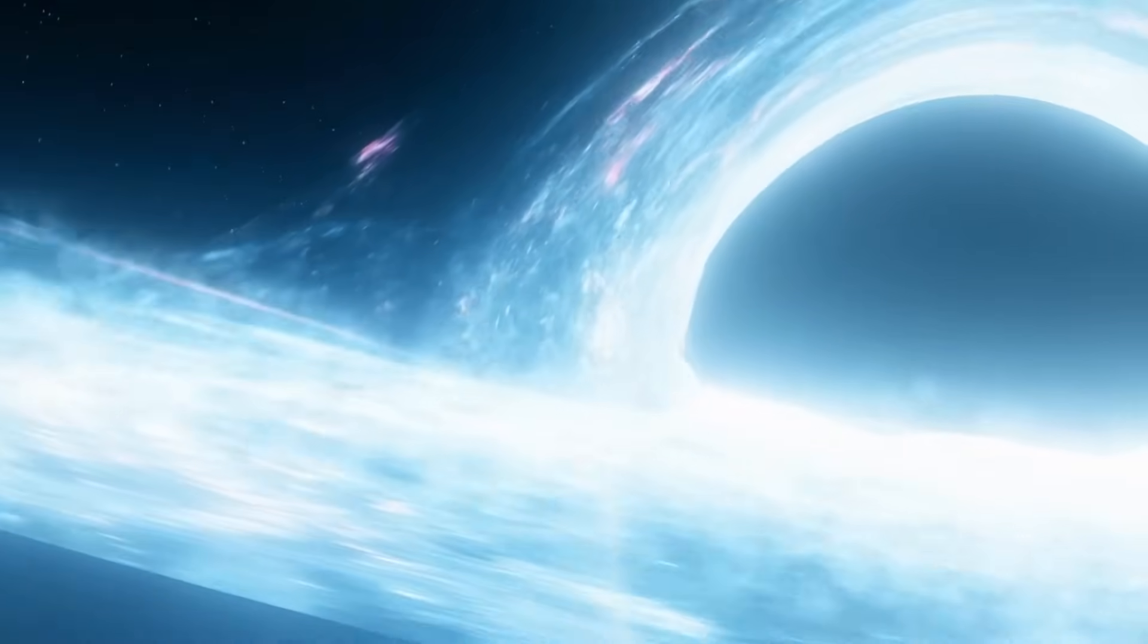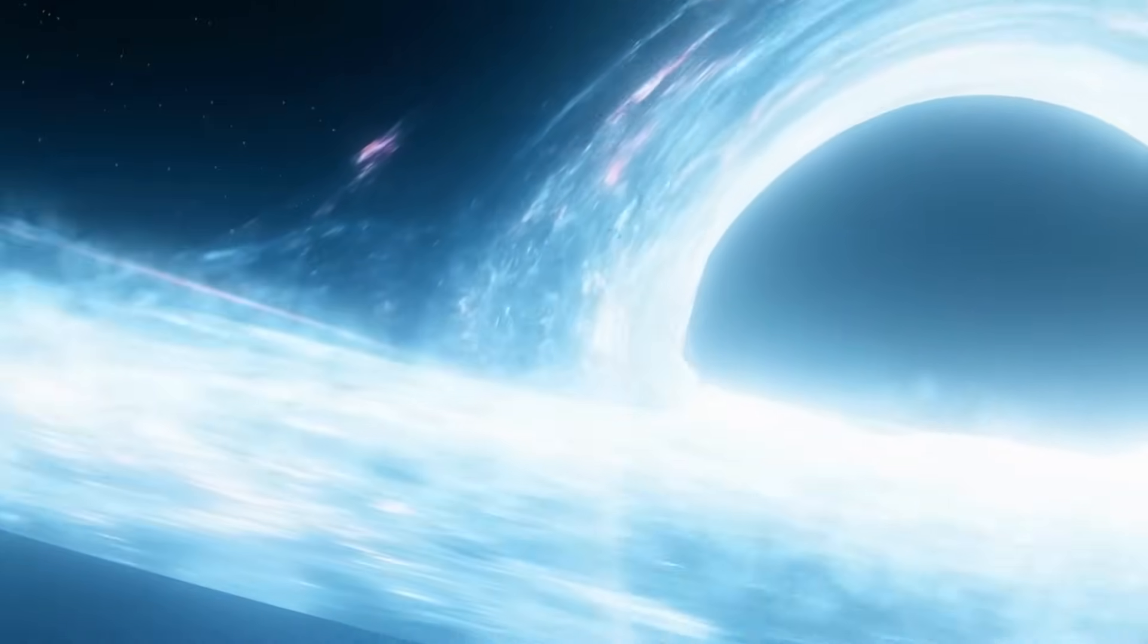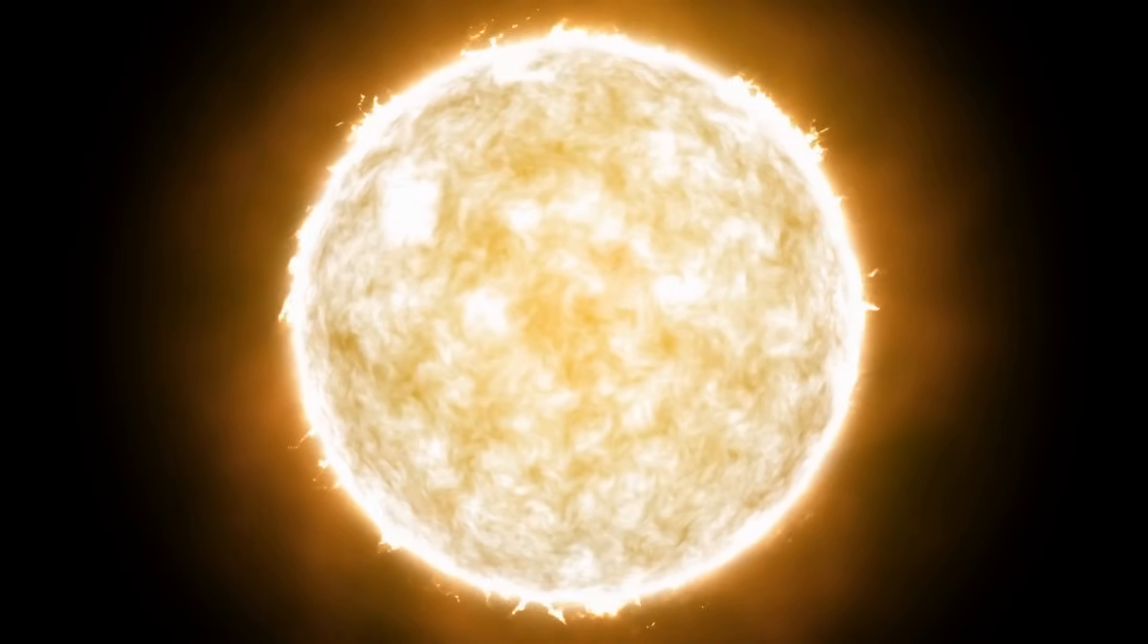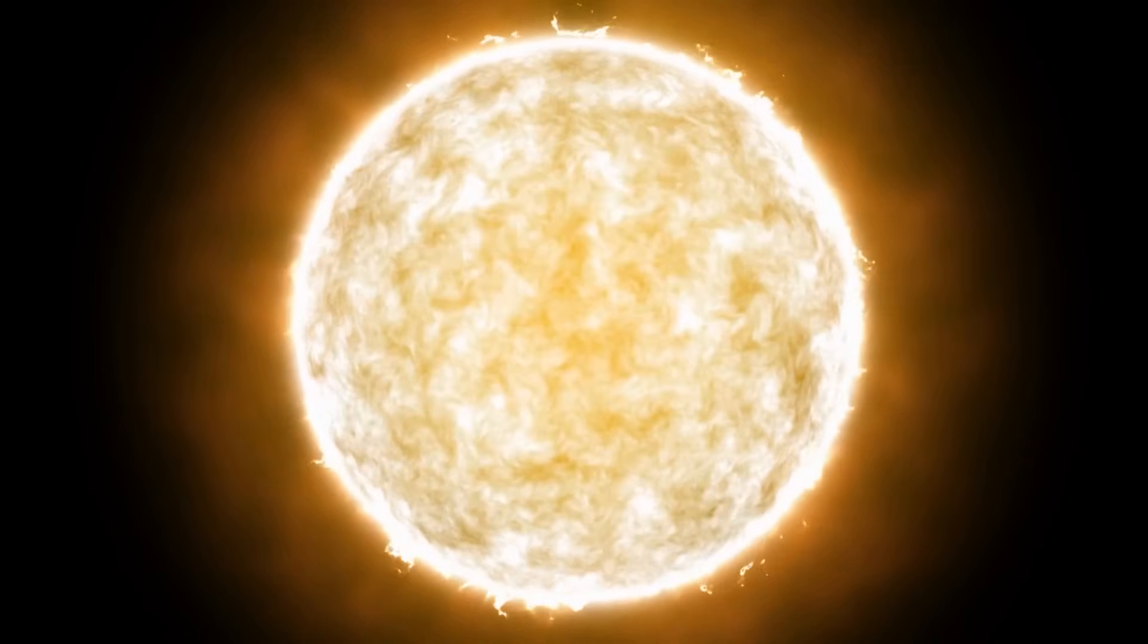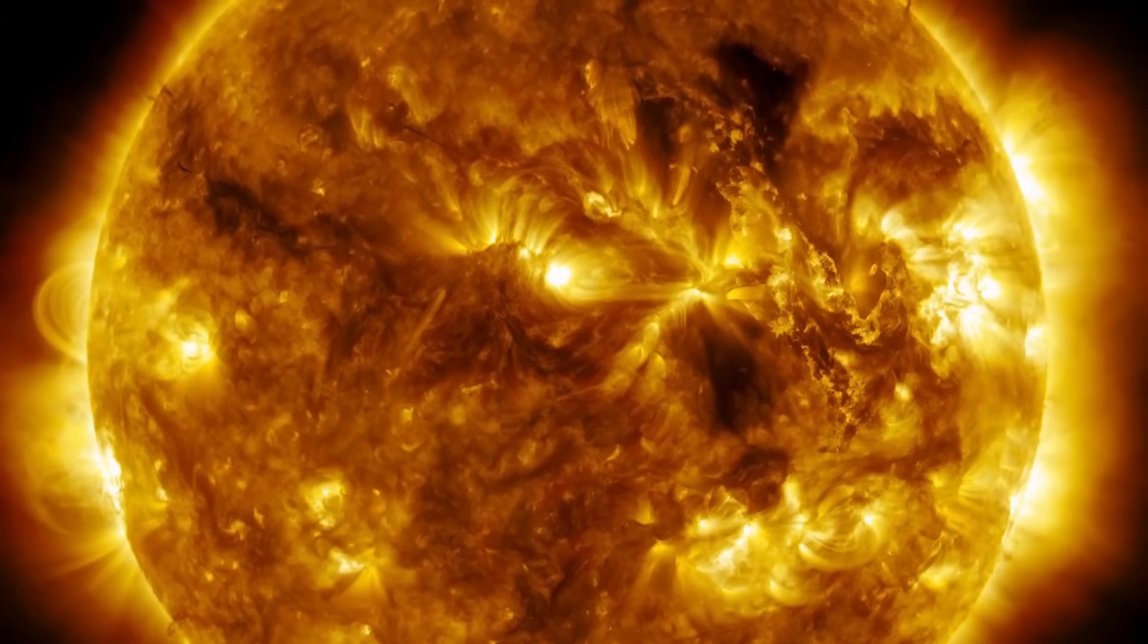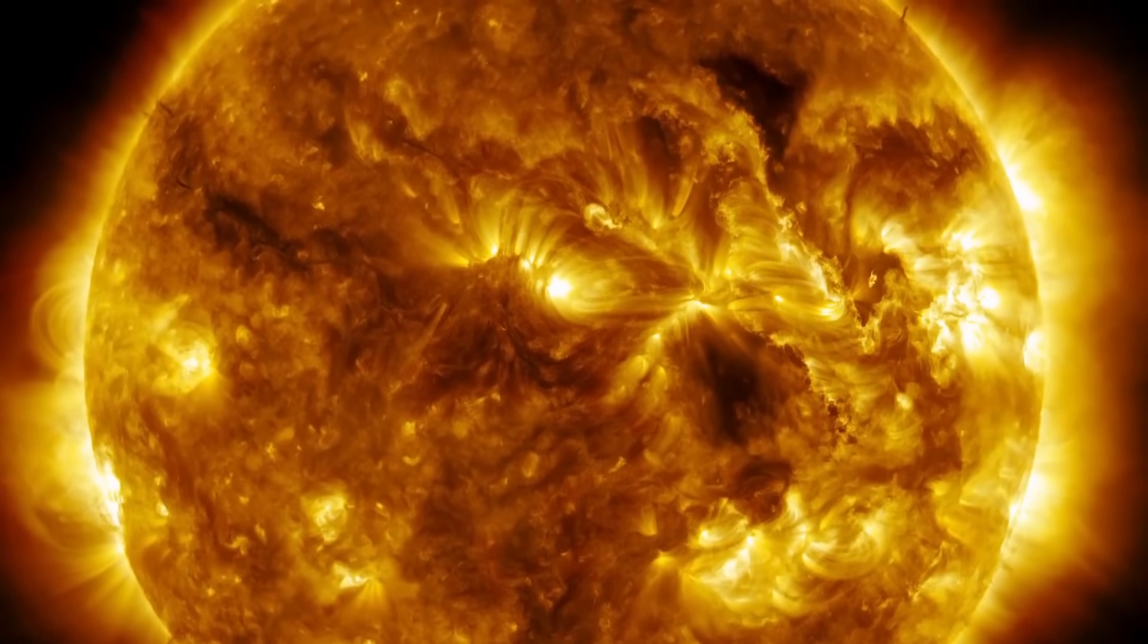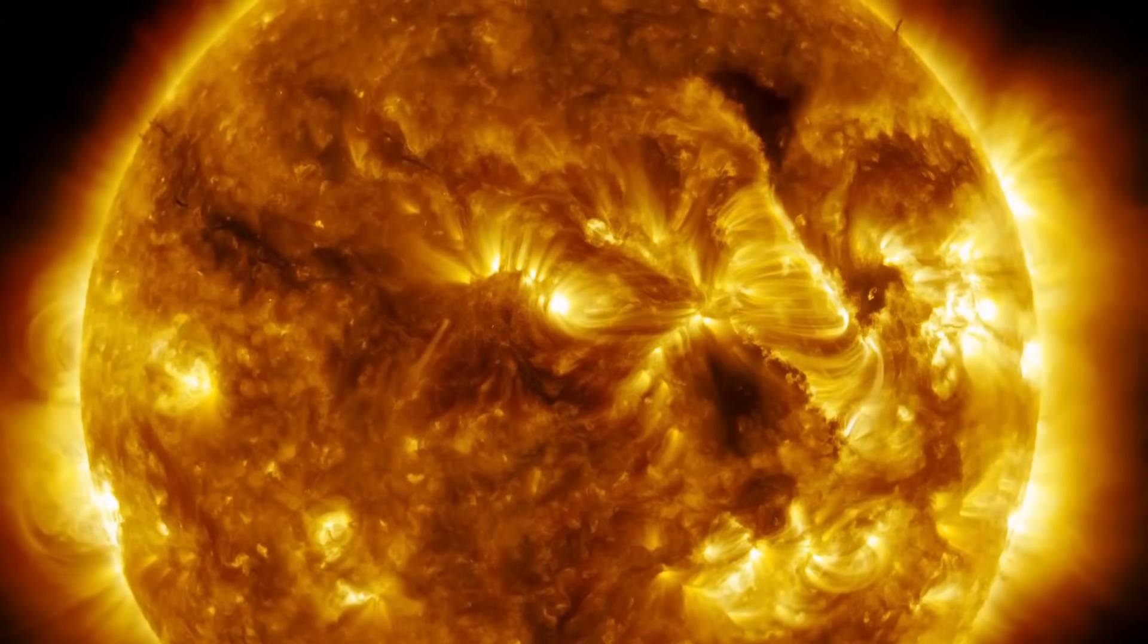To understand how black holes formed and what happens inside them, it is necessary to go back to the life cycle of a massive star. These massive stars are true cosmic powerhouses fueled by the incredible nuclear fusion reactions that take place in their cores. The sun's energy source comes from the fusion of hydrogen into helium. During this process, two hydrogen atoms combine in a collision and form a helium atom. As long as the star has enough hydrogen to carry out the fusion, it can maintain its brightness.